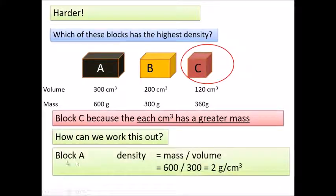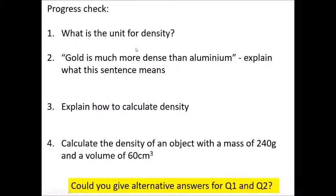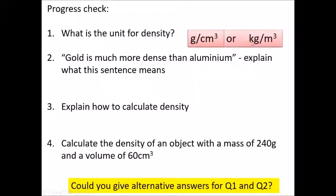For block A: 600 divided by 300 — mass divided by volume — gives 2 g/cm³. Block C gives 3 g/cm³. So the units for density are grams per centimetre cubed, which we normally use in a science lesson, or kilograms per metre cubed, which is the more scientific unit.